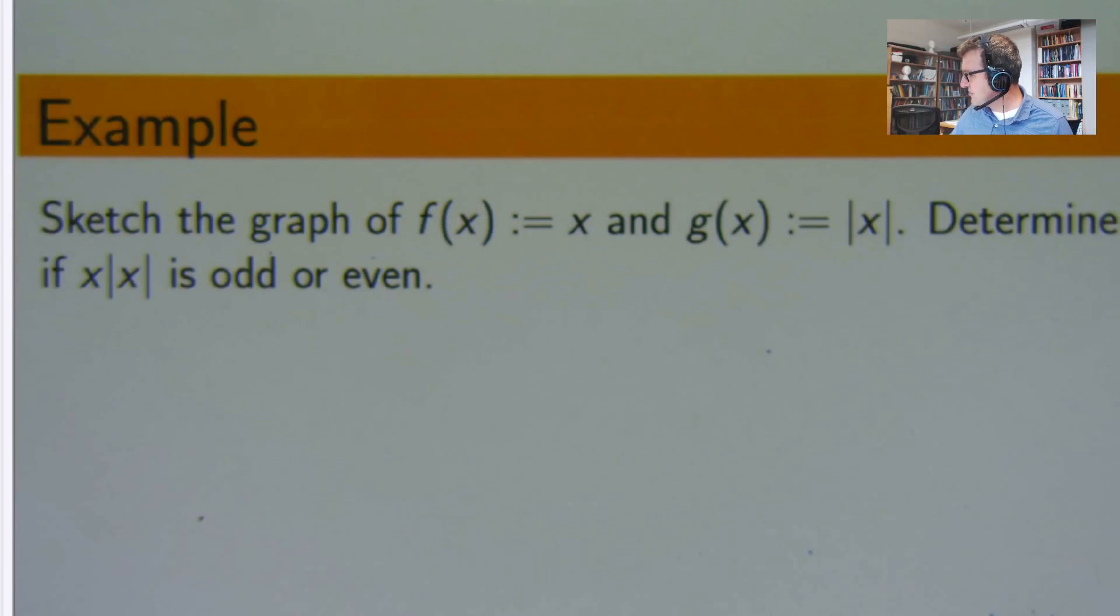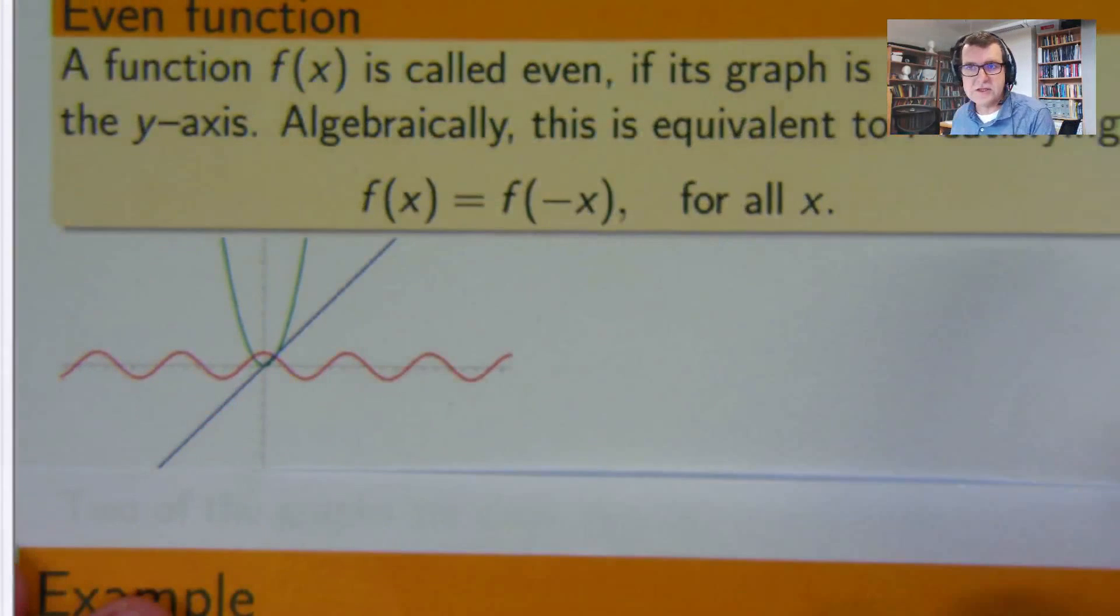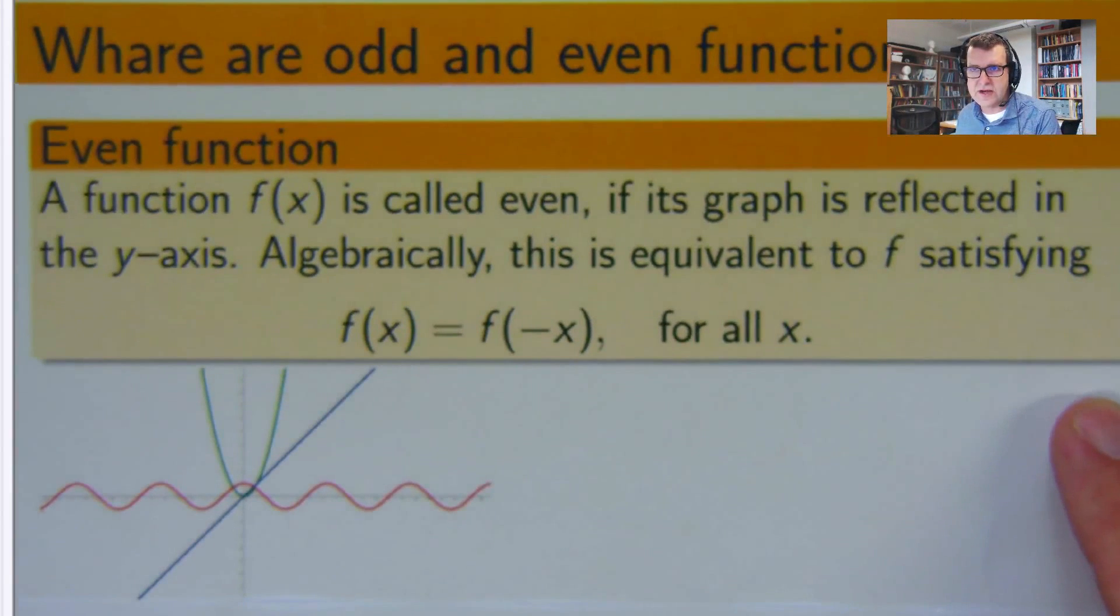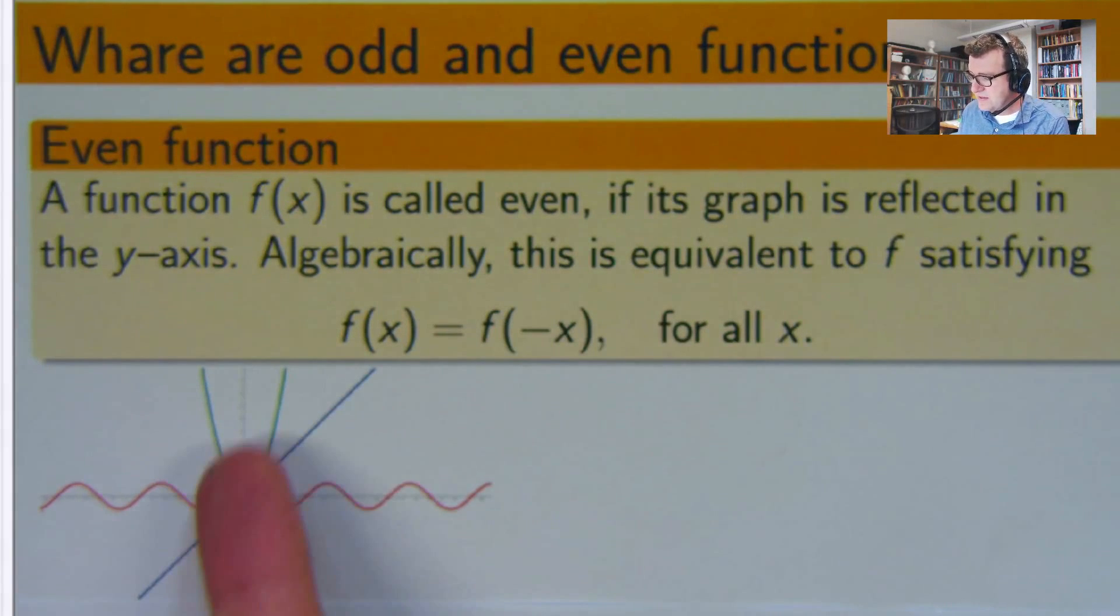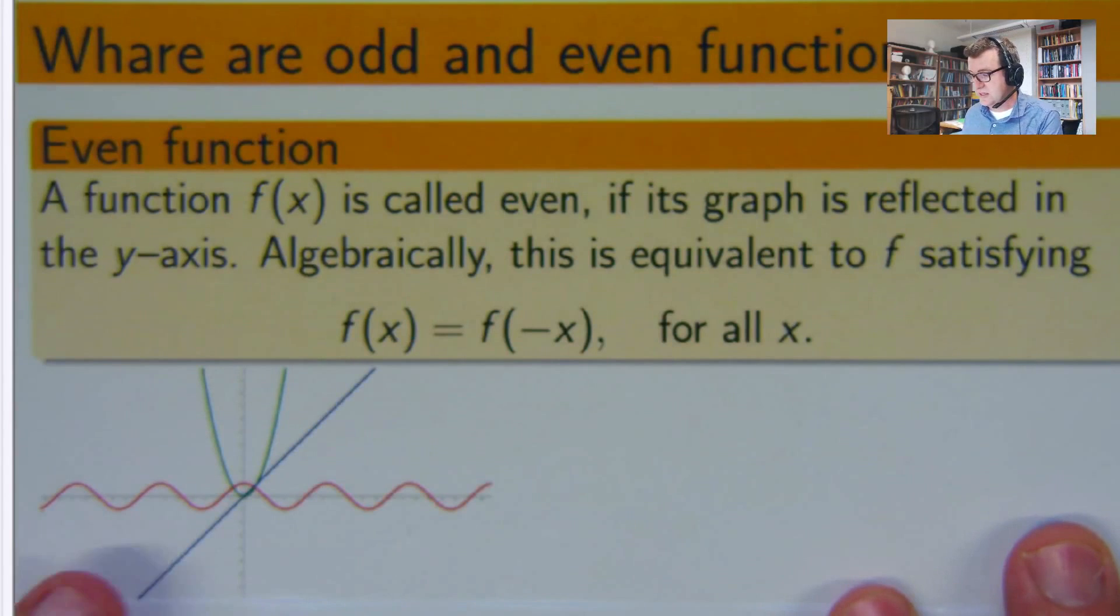So remember from the previous video that odd and even functions have some symmetry going on. Here's an even function. You can see here that there's an algebraic way of looking at even functions and then there's a visual way where the graph is reflected in the y-axis. So the red graph is even, the green graph is even, but the blue graph is not even.